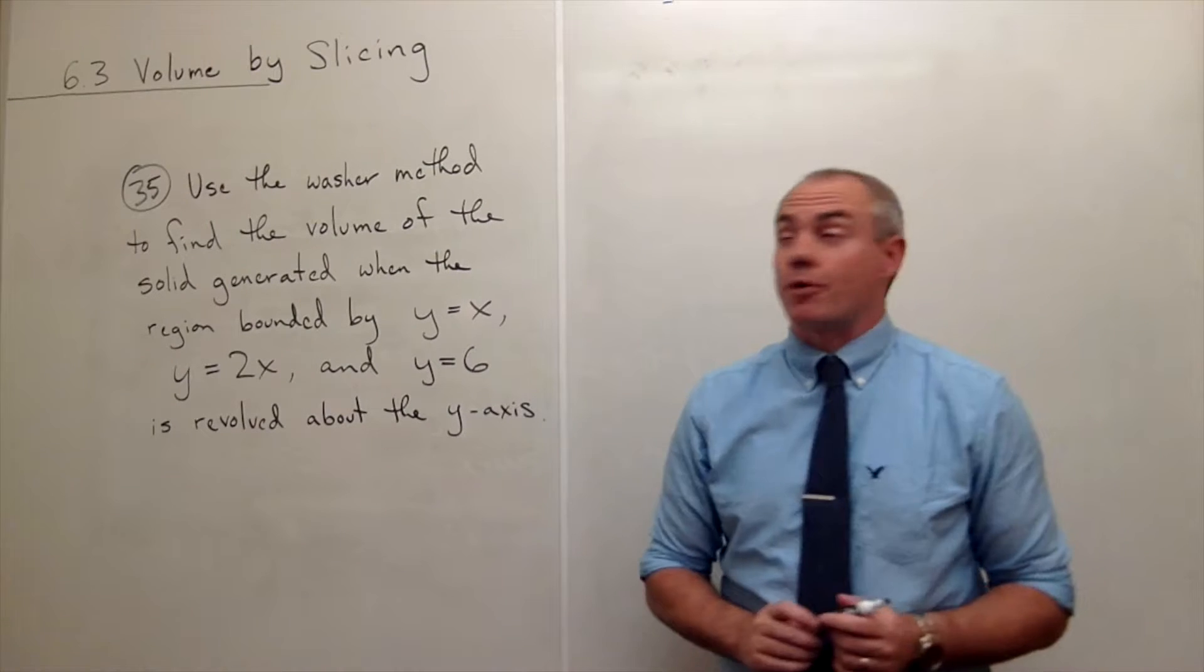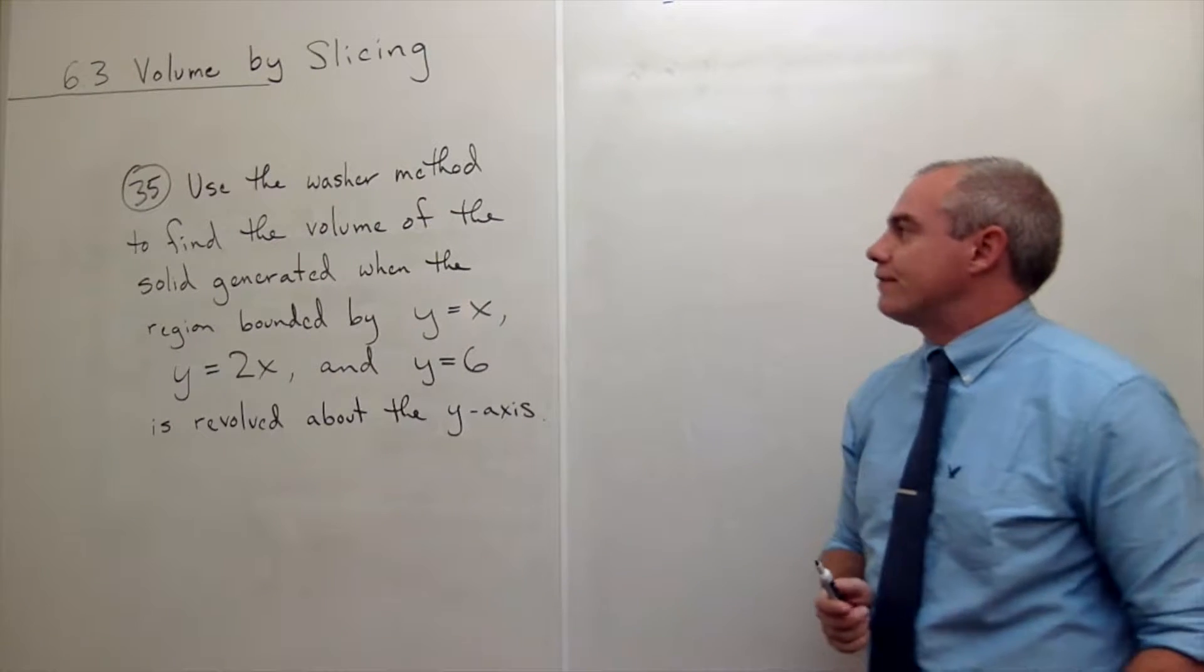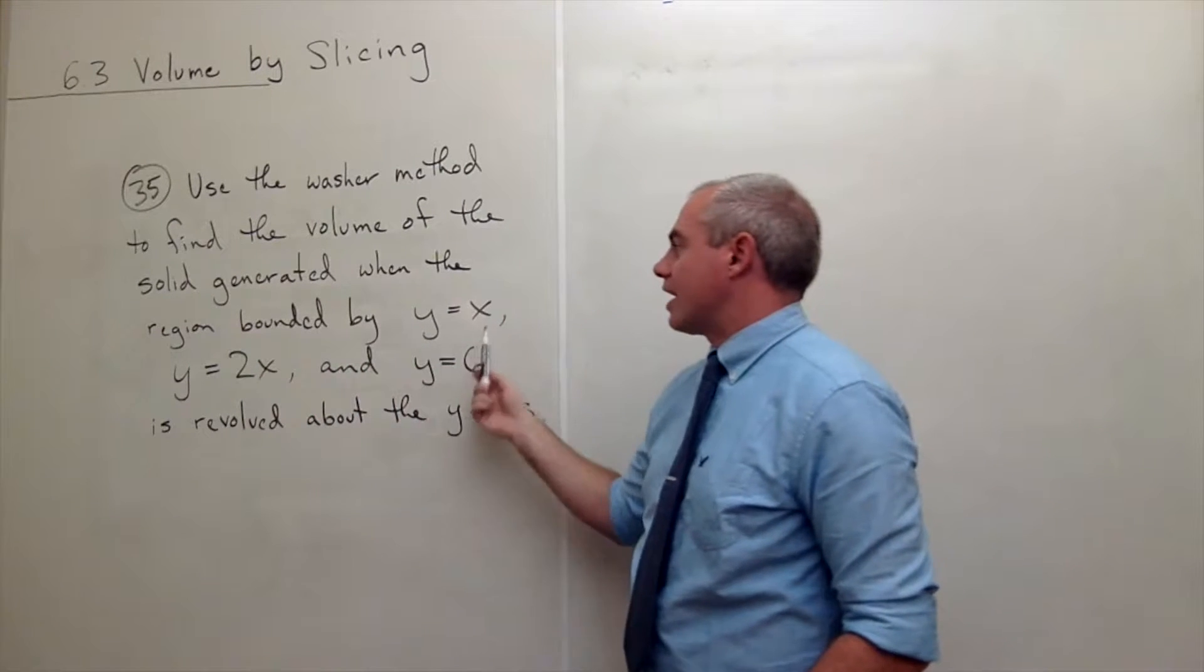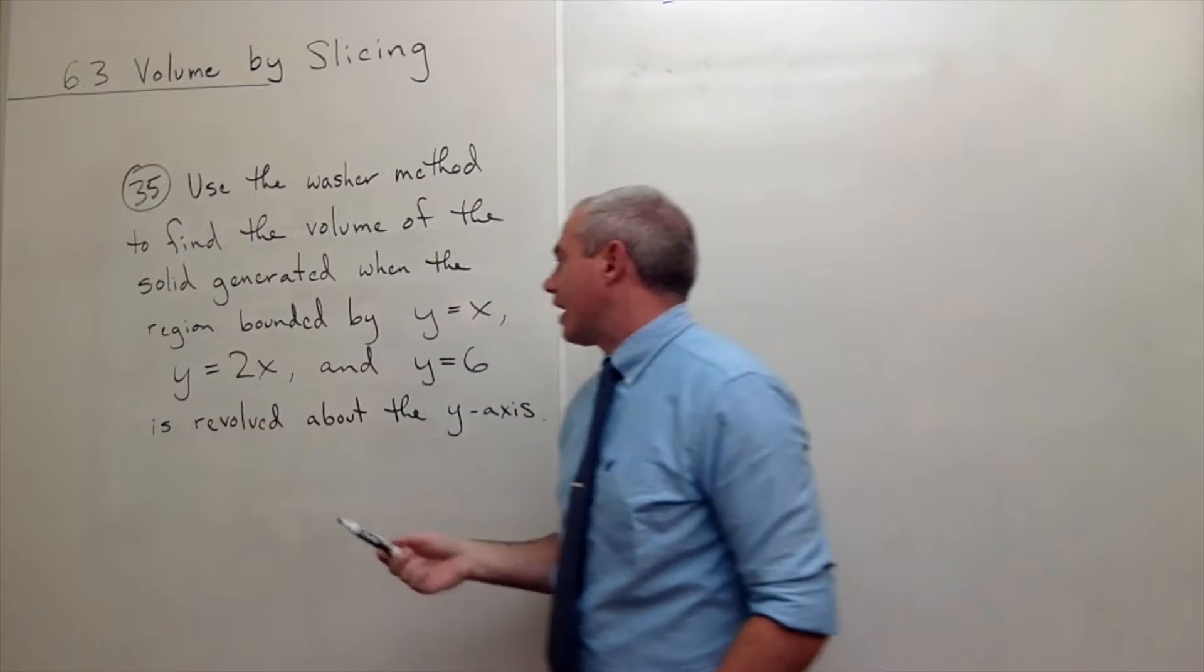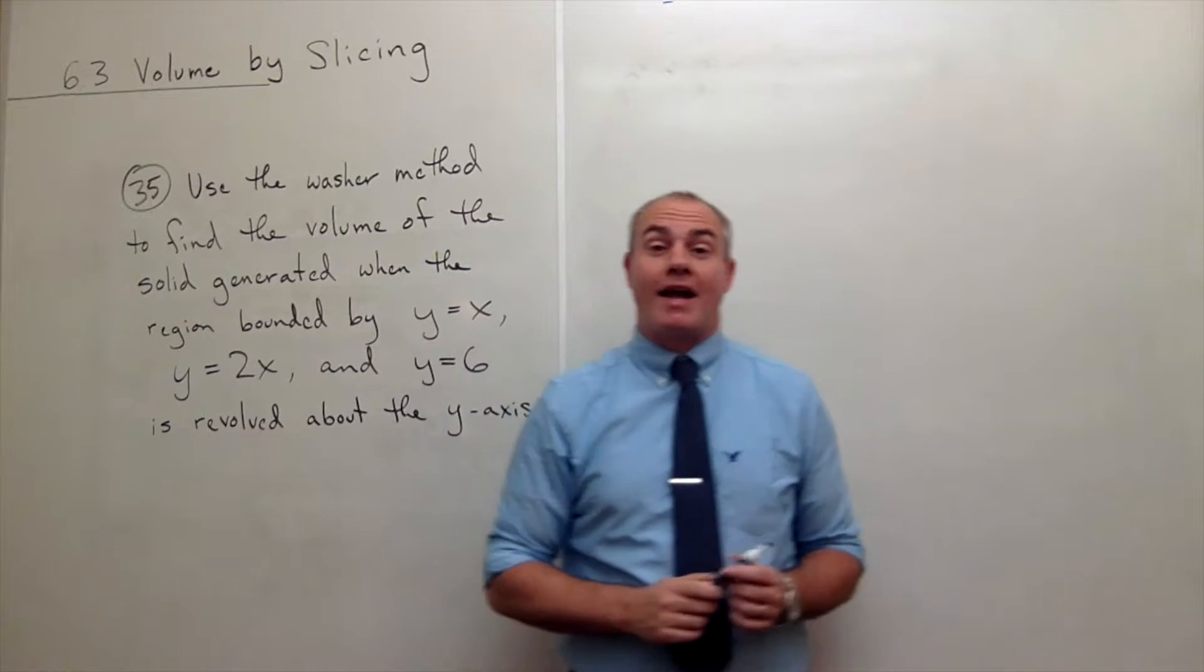I'm the Calculus Professor and today we'll be talking about volumes by slicing. In problem number 35 I'd like to use the washer method to find the volume of the solid generated when the region bounded by y equals x, y equals 2x, and y equals 6 is revolved around the y-axis.